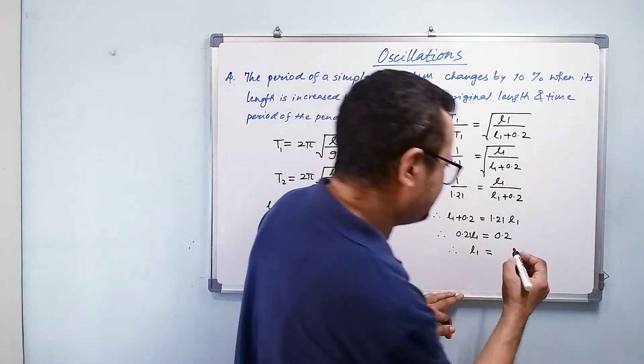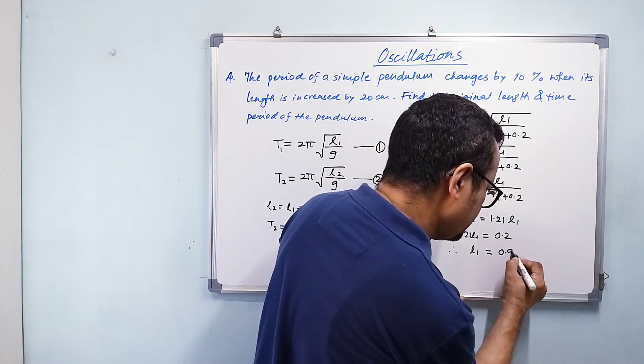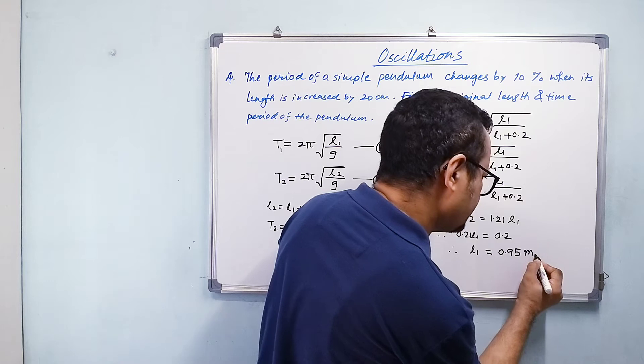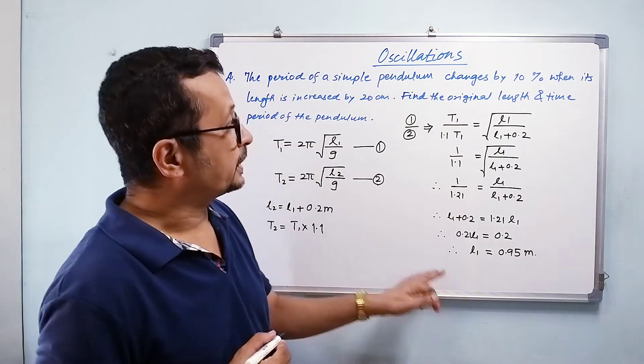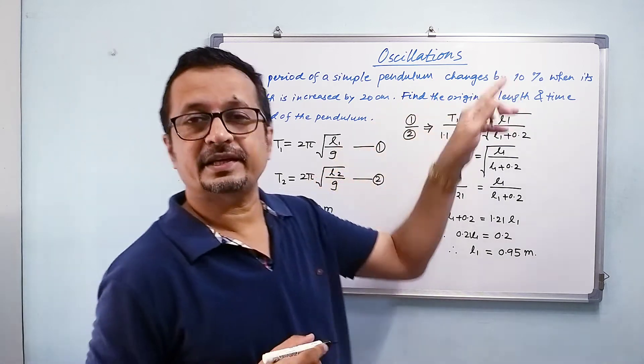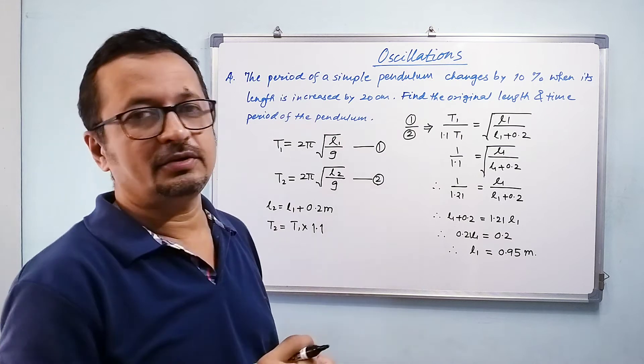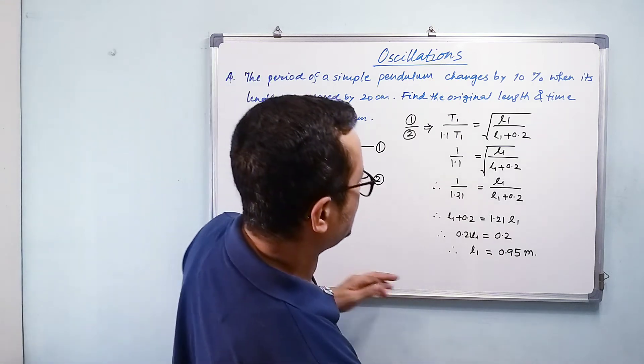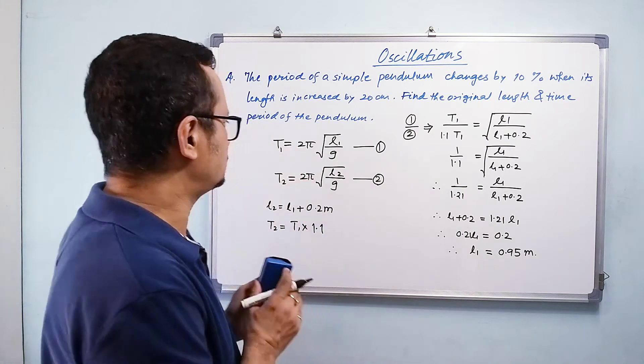It would be approximately 0.95 meters. So now, find the original length - this part has been done. And time period, I will have to substitute this value in this formula.